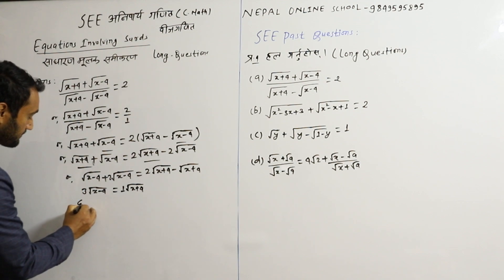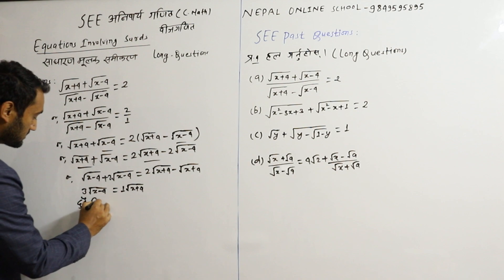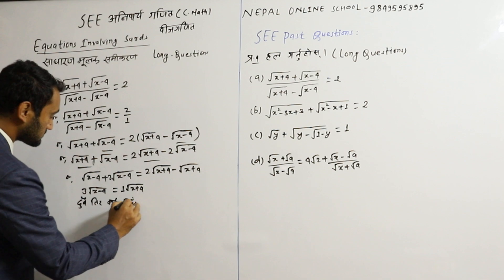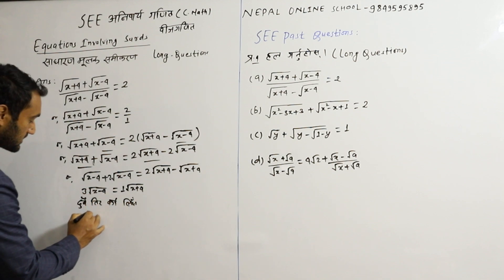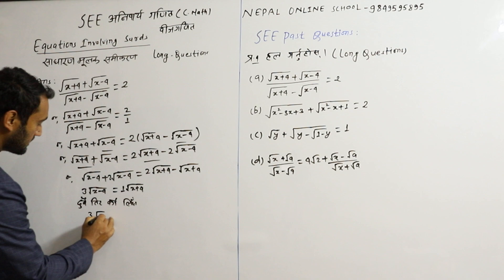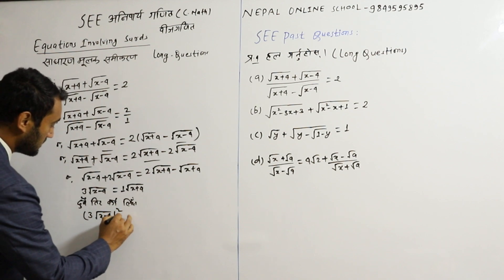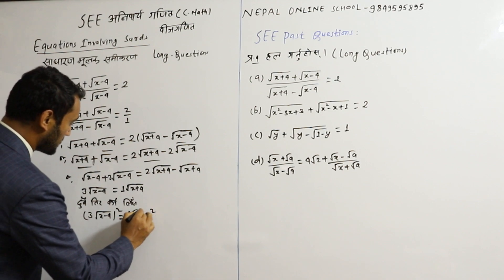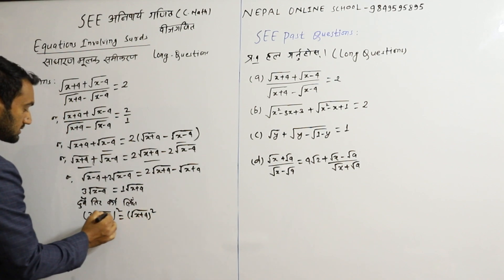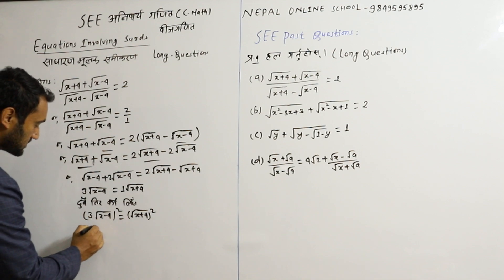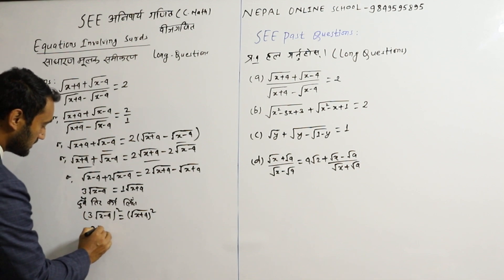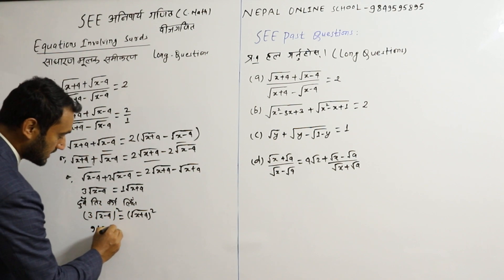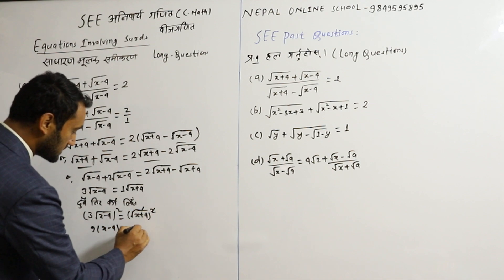So we have root(x + 4) and root(x + 4), giving 2 minus 4·root(x − 4) equal to root(x + 4). Now squaring both sides: 9 into root(x − 4) squared — cancel x − 4 — equal to root, cancel x.